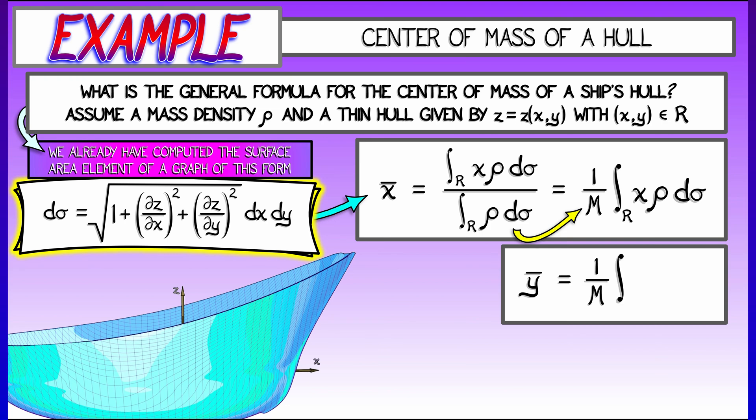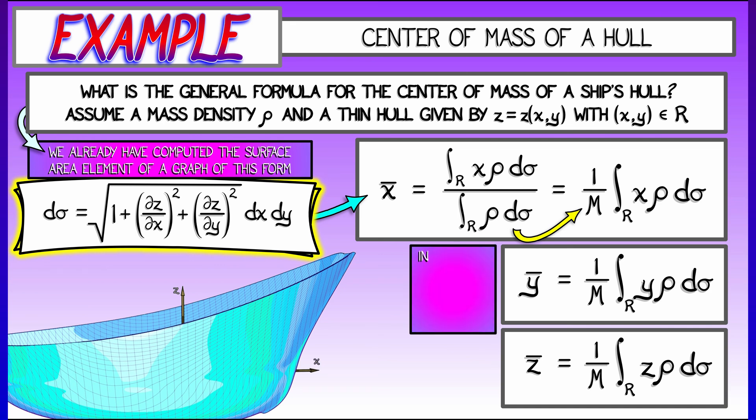The formula for y bar is similar, but you're integrating y times rho d sigma. And finally, the formula for z bar is 1 over the mass times the integral of z times rho times d sigma.